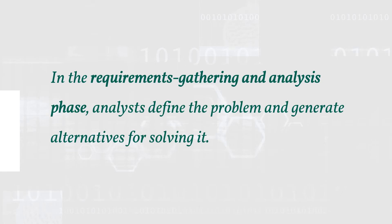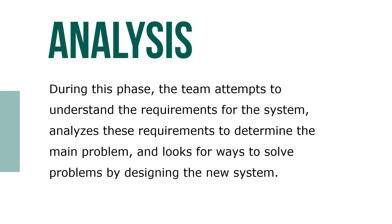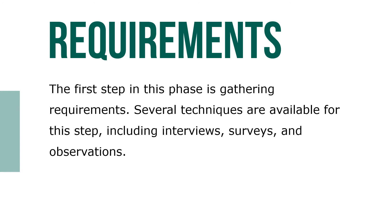In the requirements gathering and analysis phase, analysts define the problem and generate alternatives for solving it. During this phase, the team attempts to understand the requirements for the system, analyzes these requirements to determine the main problem, and looks for ways to solve problems by designing the new system. The first step in the phase is gathering requirements. Several techniques are available, including interviews, surveys, and observations.